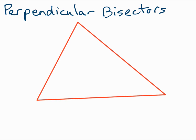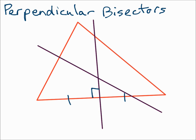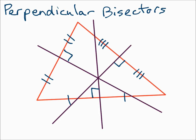Now let's draw the perpendicular bisectors of a triangle. For the first one, make sure that it hits the segment at a right angle and it cuts that segment into two congruent halves. Do that for the next side — hits it at a right angle and cuts that into two congruent halves. Those are the three perpendicular bisectors of a triangle, and they intersect at the same point, called the circumcenter.